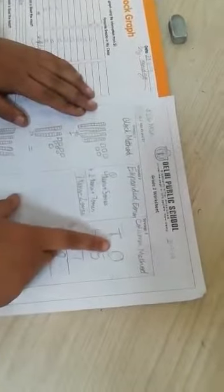Now, I am going to explain column method. In column method, there is T and O. T stands for tens and O stands for ones. In tens, we will write 4 for 40 and in ones 5. It will be 45.